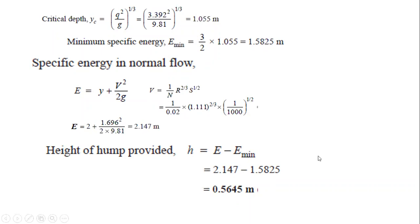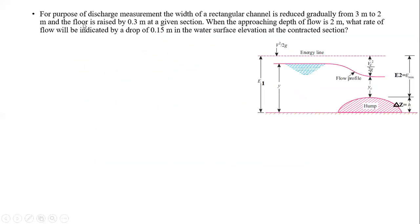The next example: for the purpose of discharge measurement, the width of a rectangular channel is reduced gradually from 3 meters to 2 meters, and the floor is raised by 0.3 m (Δz = 0.3 m). The approaching depth of flow is 2 m. The sketch shows a width of 3 m at the upstream section and a reduced width of 2 m at the contracted section.